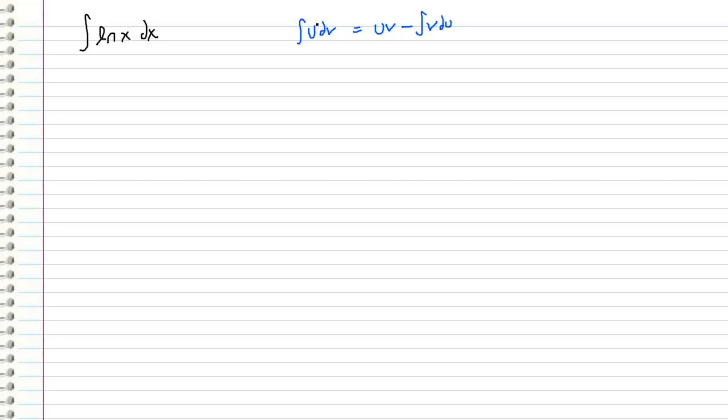So this holds for two functions u and v, so all we have to do is come over to our integral over here, figure out what we want to use as u and what we want to use as v, and then plug it into this formula for integration by parts and go from there.